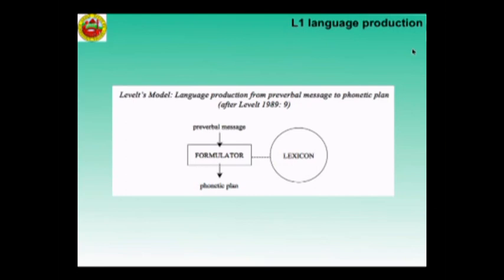Levelt's model assumes that when we intend to say something, we select in the conceptualizer the information whose expression may realize our communicative goals. Since any state of affairs can be expressed in many different ways, in the conceptualizer we also plan the form of the message — selecting the language, the register, the speech acts, etc. We also assign topic and focus, mark references as given and new, and so on. Although pre-verbal, the conceptualizer's output already includes some information about the relative prominence of its elements.